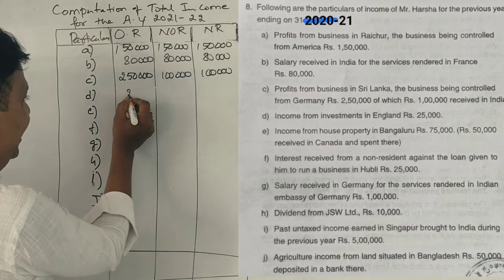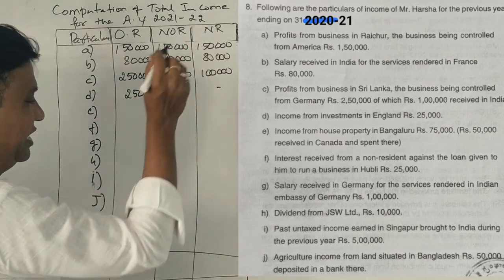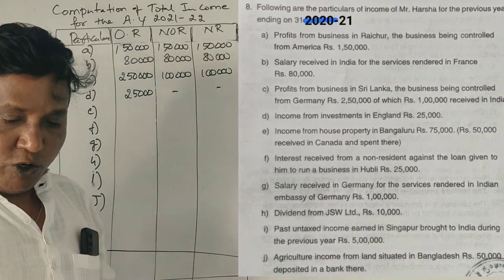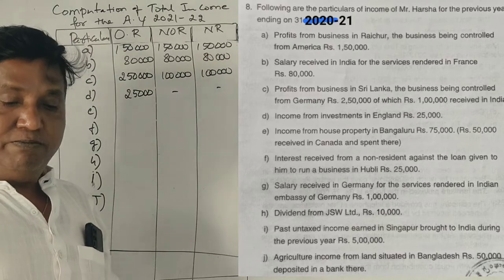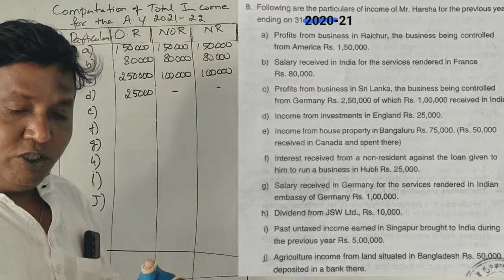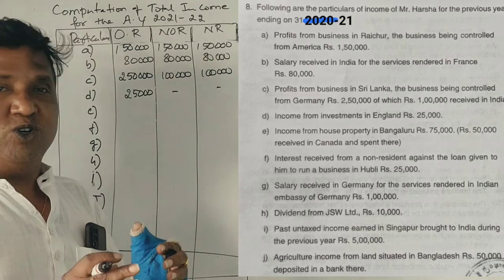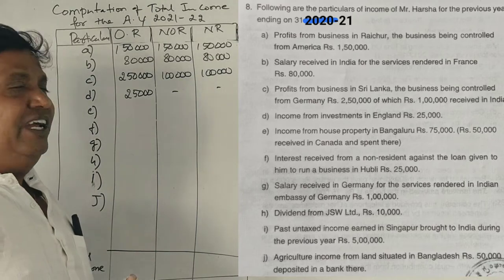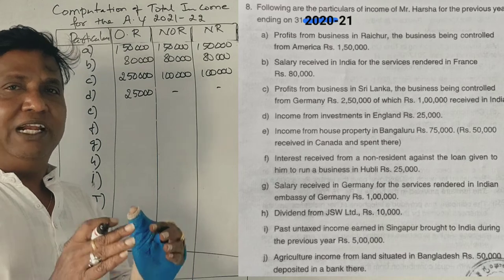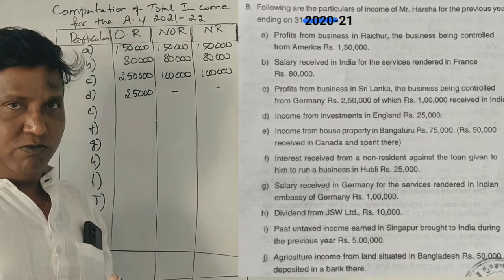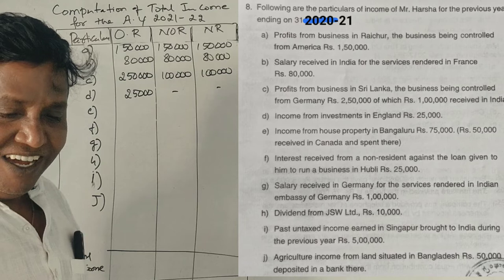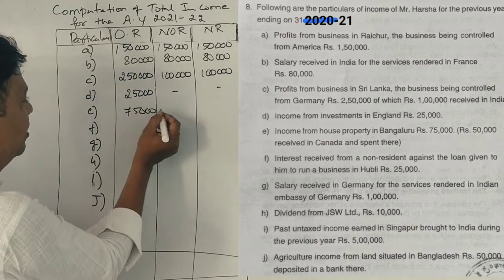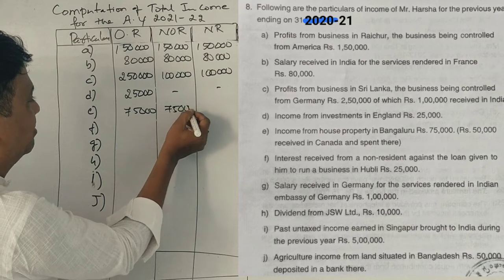First case: investment in England — 25,000, charged. Next point: income from house property in Bangalore — 75,000 rupees. Income earned in England — 75,000 rupees.